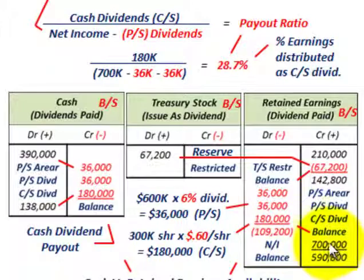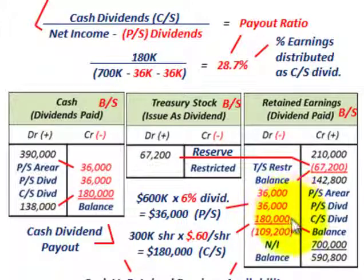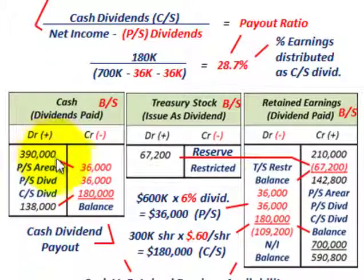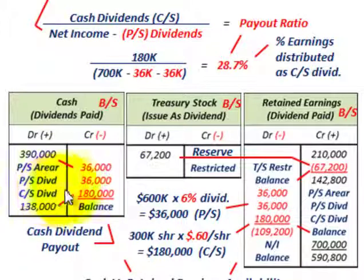However, we add net income for the year of $700,000, increasing retained earnings, which wipes out the deficit and leaves enough to pay dividends for both preferred and common stock, with a retained earnings balance of $590,800. On the cash side, we started with $390,000, reduced it by $36,000 for preferred in arrears, $36,000 for current year preferred dividend, and $180,000 for common stock dividends, ending with a cash balance of $138,000.